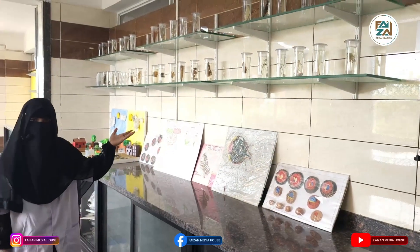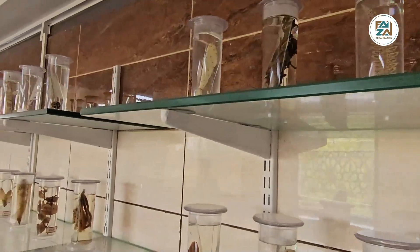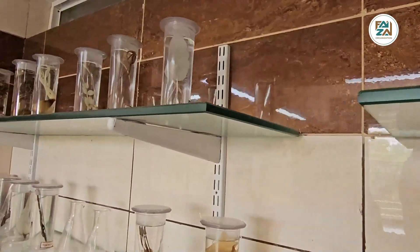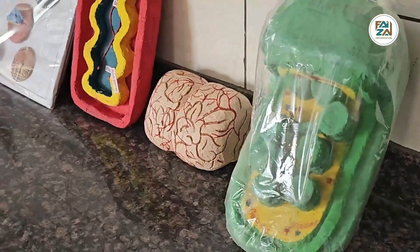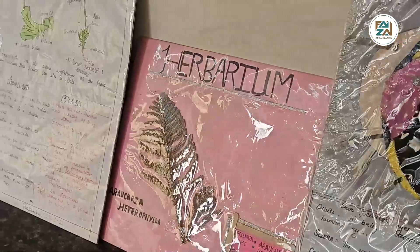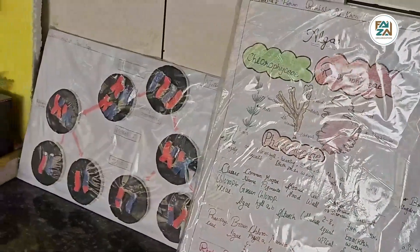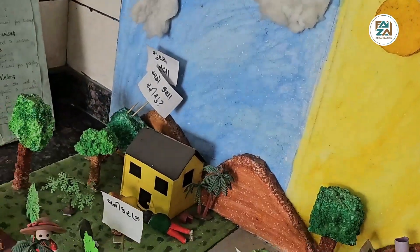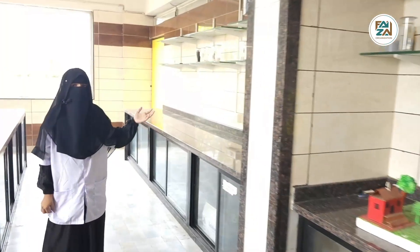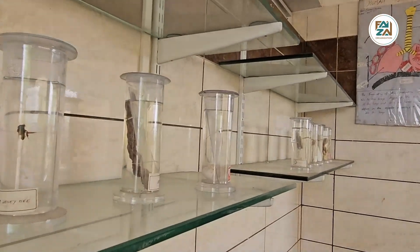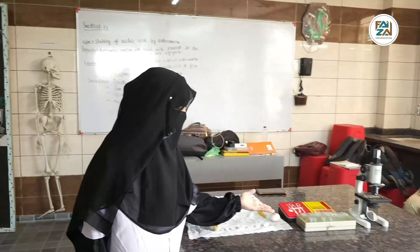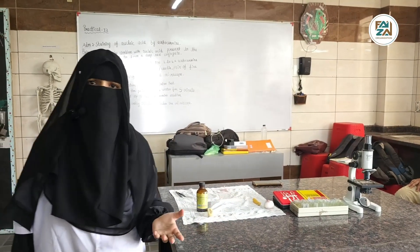Here we have all of the plant specimens and here we have our animal specimens. We have permanent slides, microscope, and all of the other things and chemicals required for our practical.